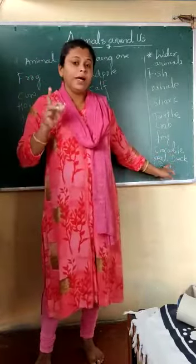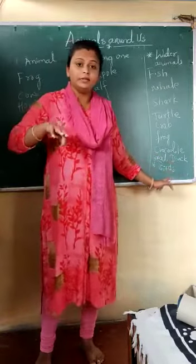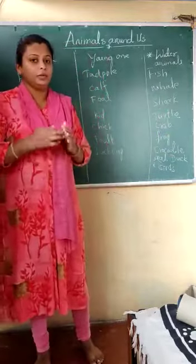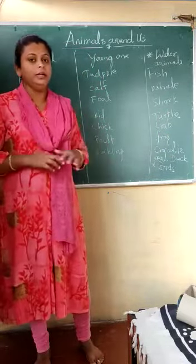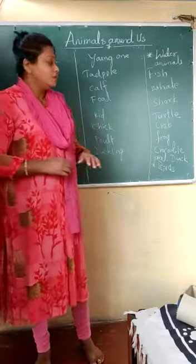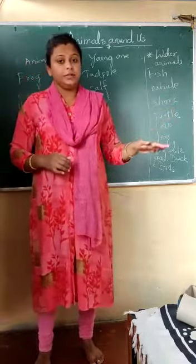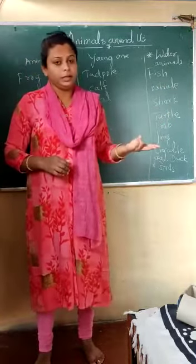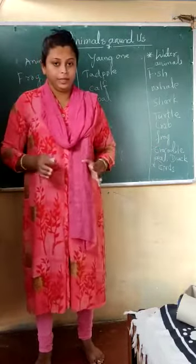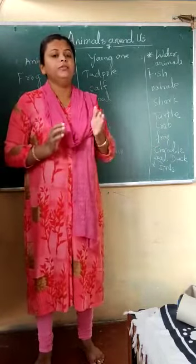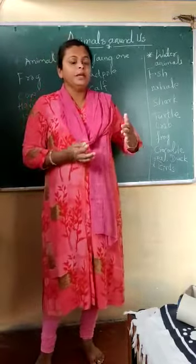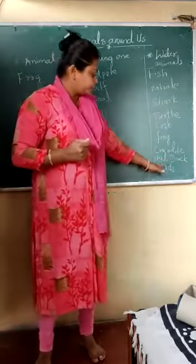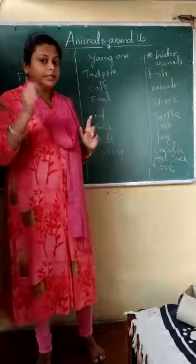Seal is also one aquatic animal which lives on the land and in the water. Even the bird duck lives both on the land and on the water. So animals which have the characteristic of living in both water and on land are called amphibians, because they have the property of adjusting their skin or body in water as well as on land. This is about aquatic animals.